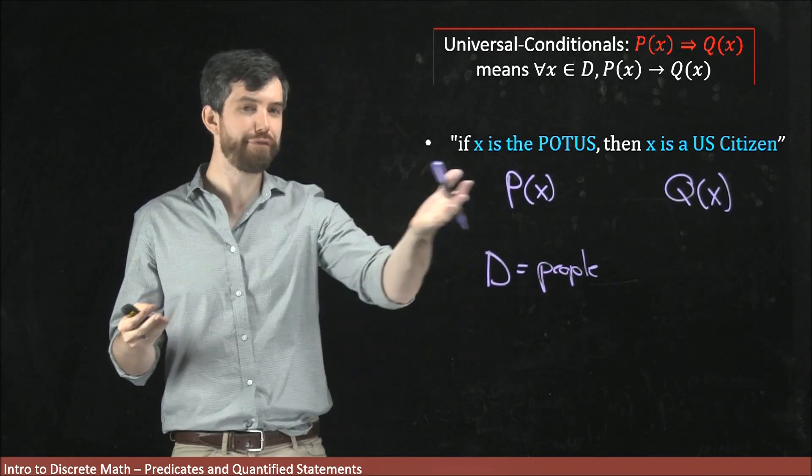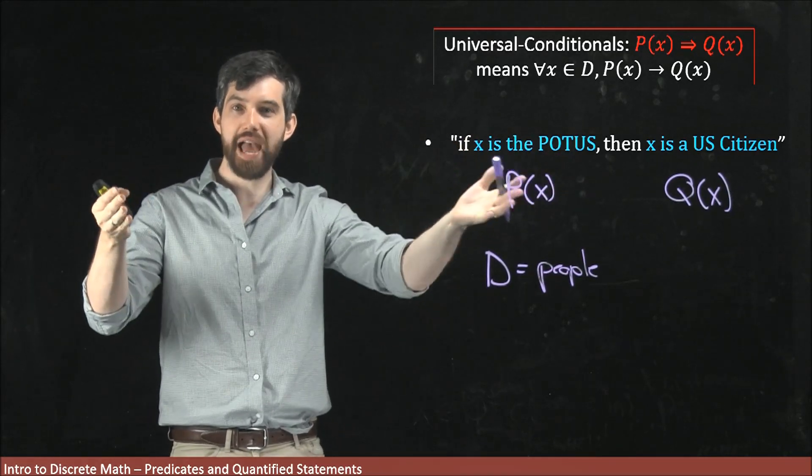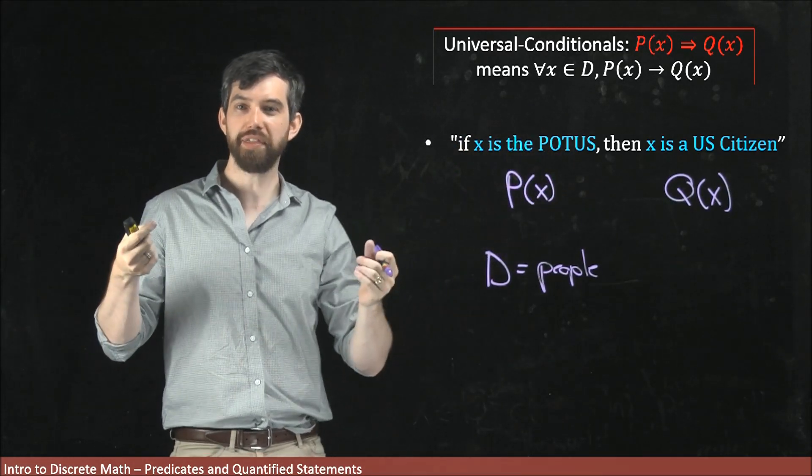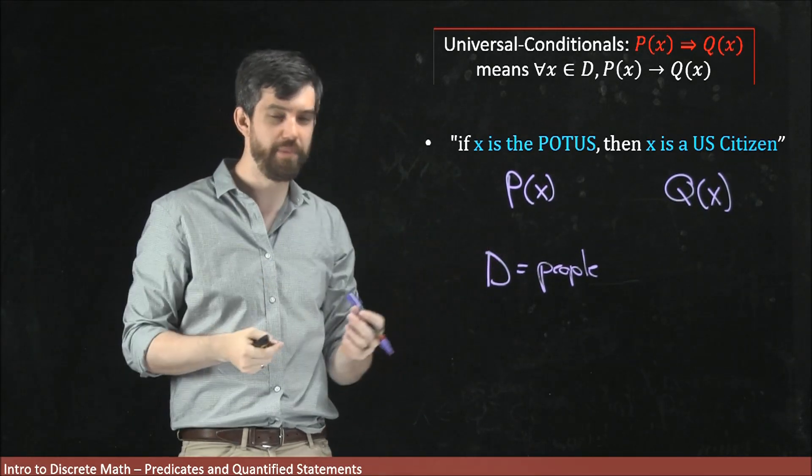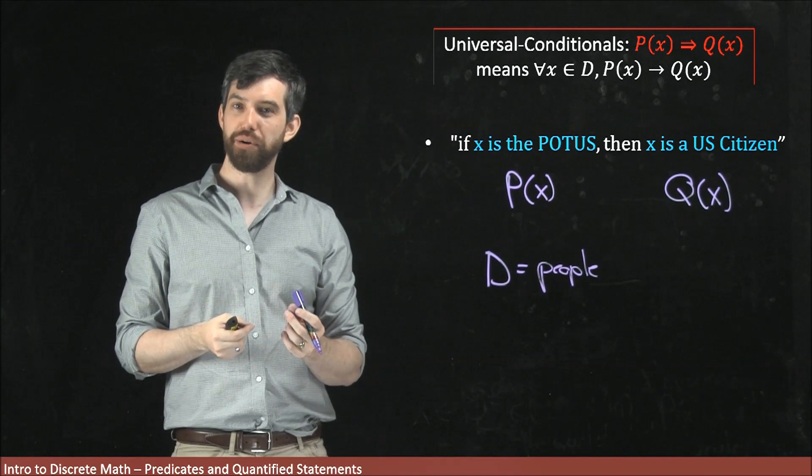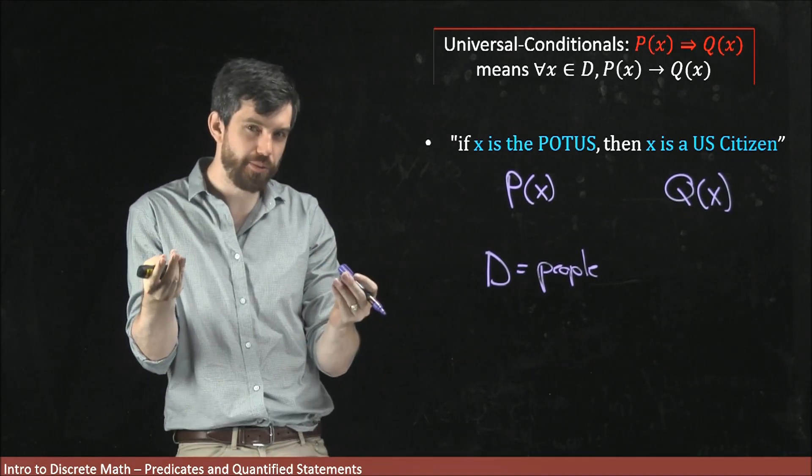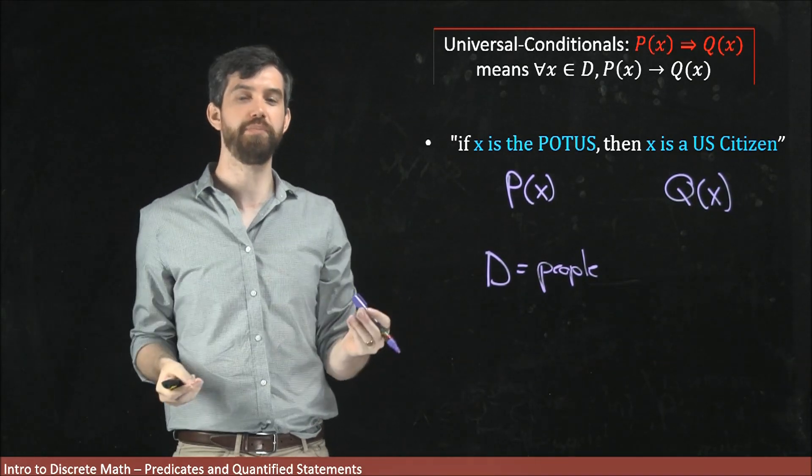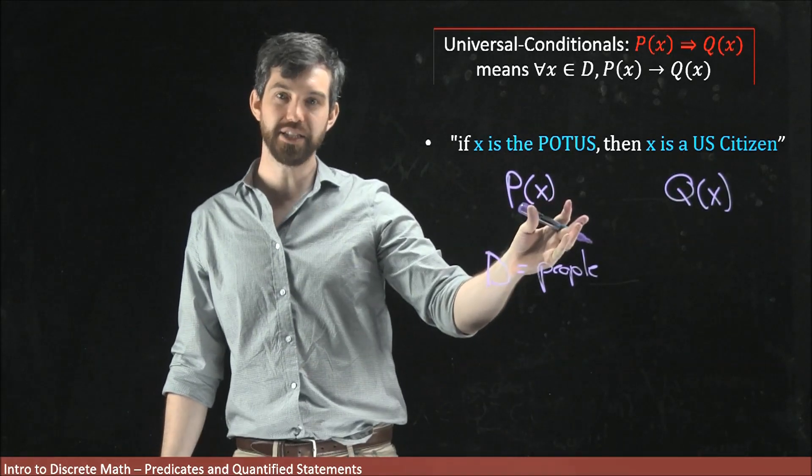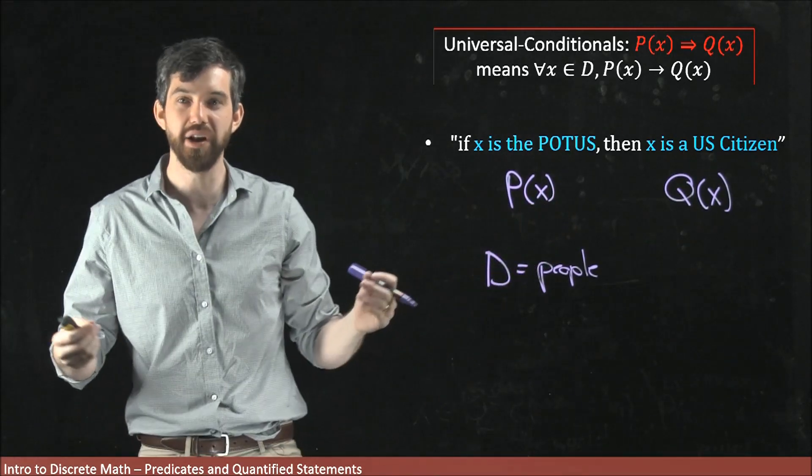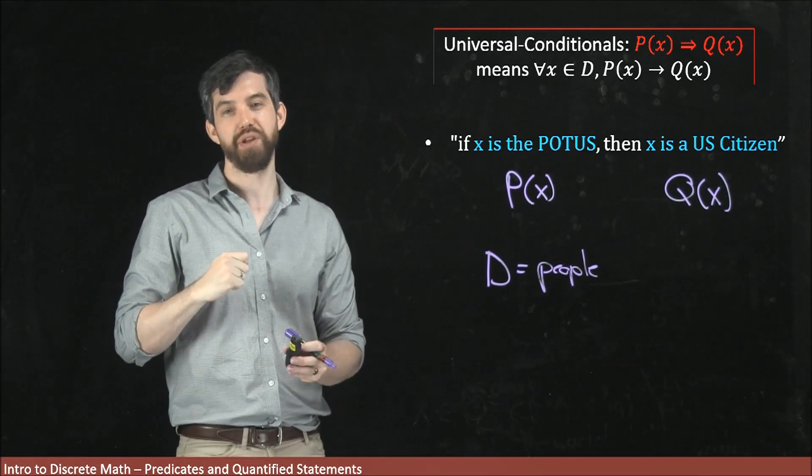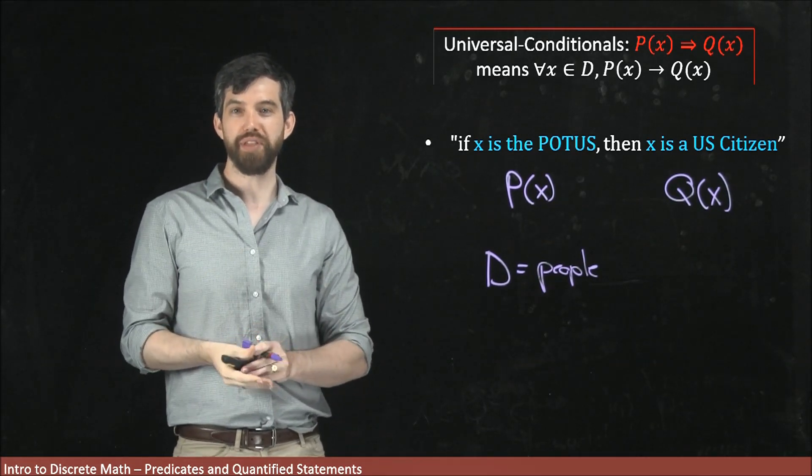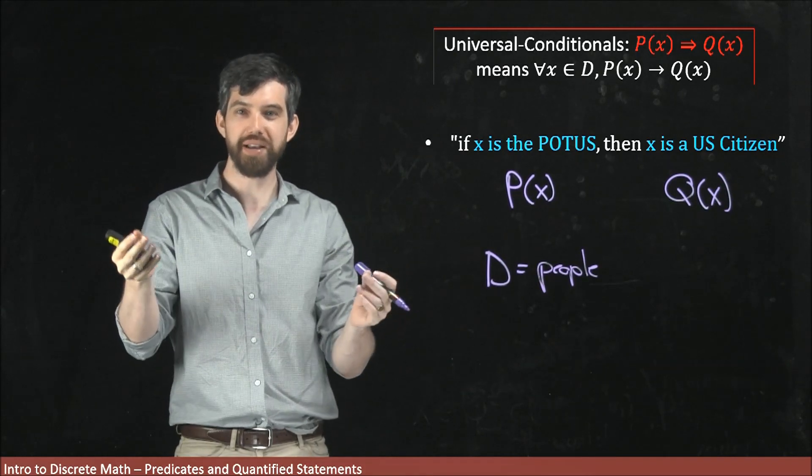Note that when I phrase it here as an if-then, as a conditional, the universal part—the for all x in the people part—is not explicitly written, but it still is there implicitly. When I say if x is the President of the United States, I am saying for all people that happen to be the President of the United States. So this is the equivalence between these two ideas.